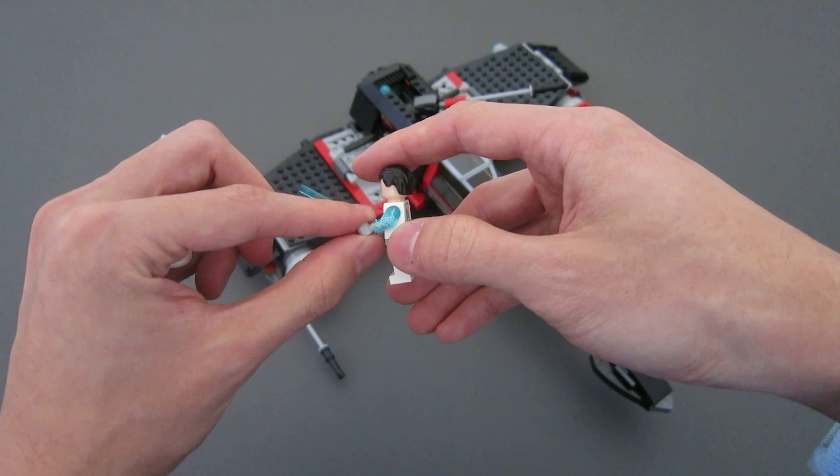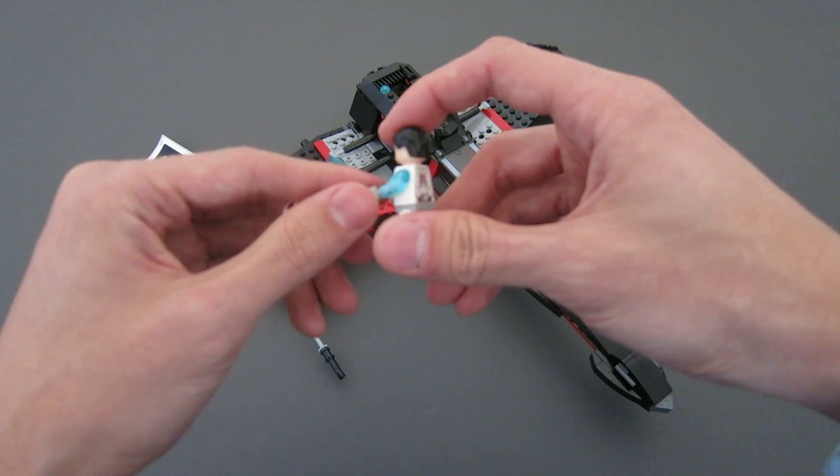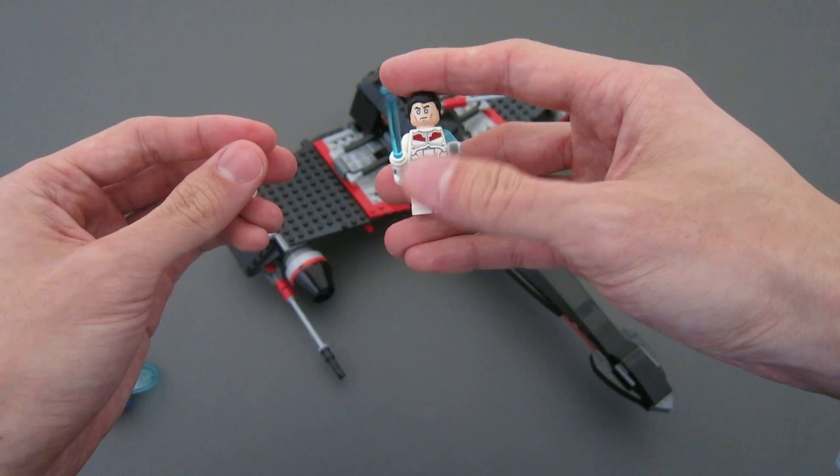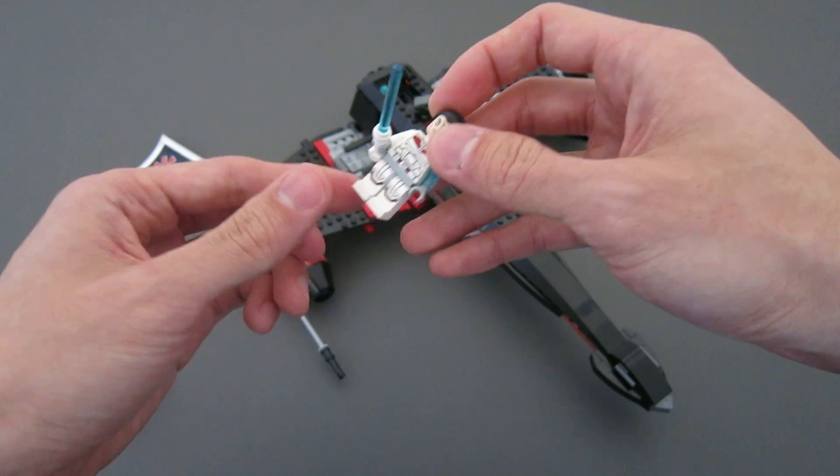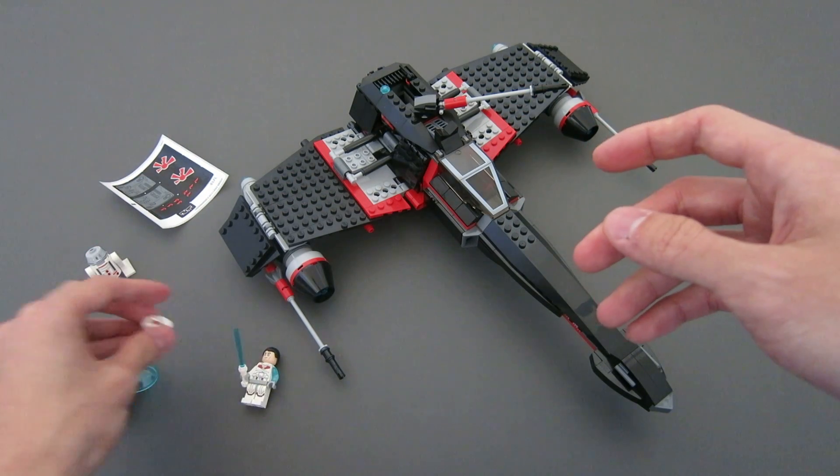It also includes a transparent light blue arm with a printed lightning pattern on the side. Pretty cool, I've never seen a transparent arm before.